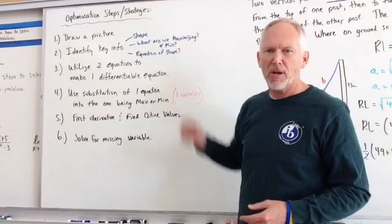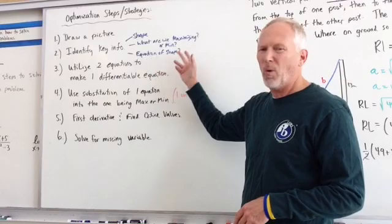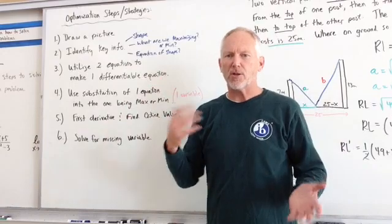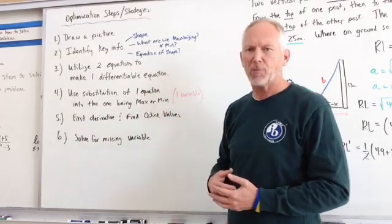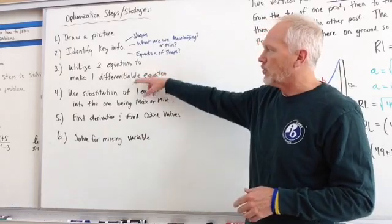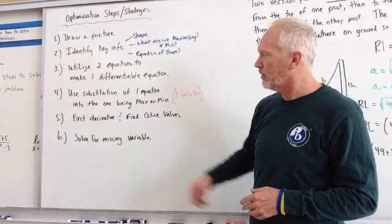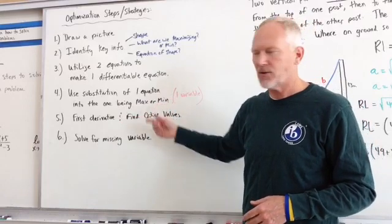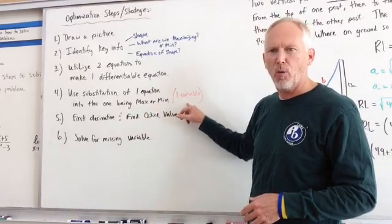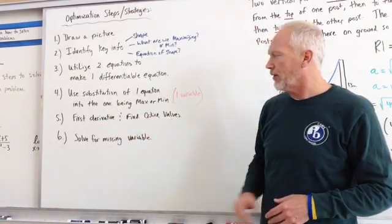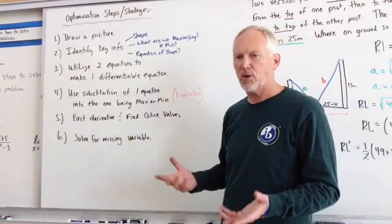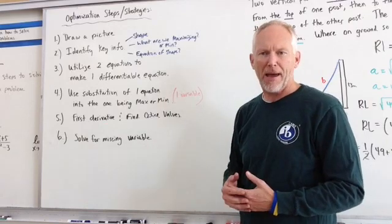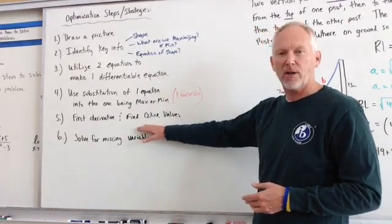What are we maximizing or minimizing? Does the problem tell us some of that? What is the equation of the shape? So many things you're going to have to have up here that you may not have readily accessible with you. So all these old equations and expressions that you have stored in your head, you're going to need them. Utilize two equations to make one differentiable equation. We're going to use the substitution method of one equation into the other that's being maximized or minimized. And that will be now able to have it nailed down to one variable. You're going to take the first derivative and find the critical values. And once you have that, you can also then take the second derivative test, plug that critical value in and make sure that it's a max or a minimum.